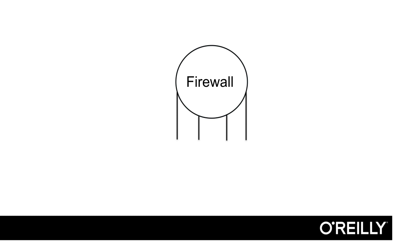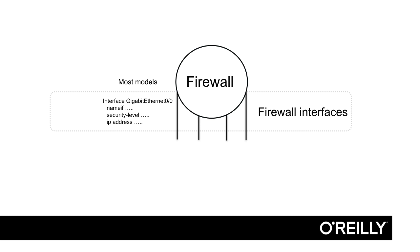The ASA 5505 is not like the other models. In most firewalls, we configure the physical interfaces, and the firewall interface is the same as the physical interface. That means that in a firewall like this example with four interfaces, we configure the name-if, security level, and IP address commands on each of those four interfaces. Each interface has a physical name like GigabitEthernet 0/0, 0/1, 0/2, and so on.